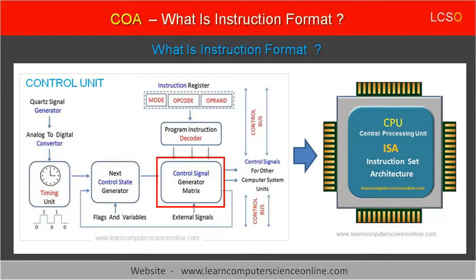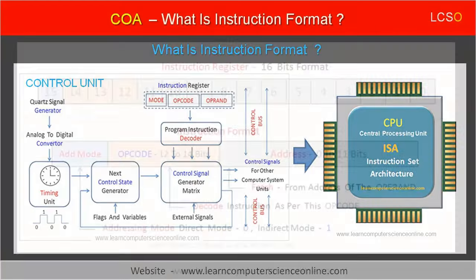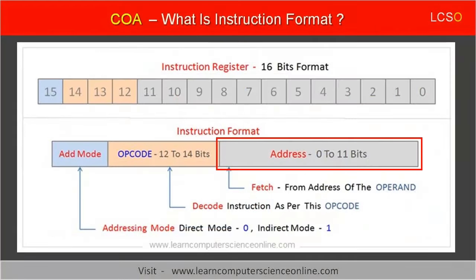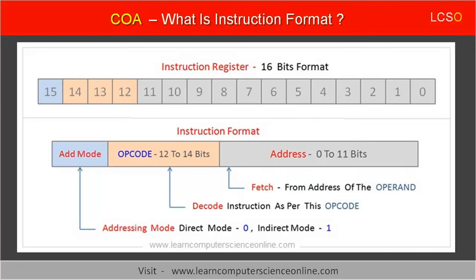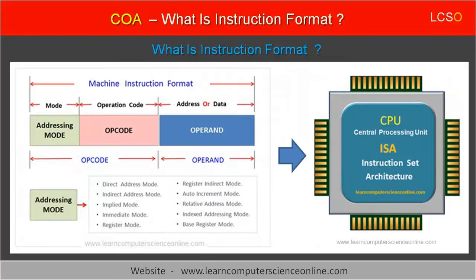The control unit generates control signals for the ALU to execute the desired operation on the data. The next field of the instruction format is operand. In computing, the operand part of the instruction format specifies either the data, or the address of the data, that needs to be operated by the processor. After decoding the instruction, the next thing the CPU needs to know is the data on which the operation is to be performed as per the operation code. The operand can either contain the data or the address of the data.